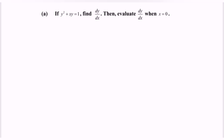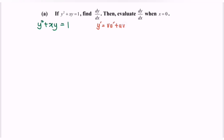Focus on the question: y squared plus xy is equal to 1. Focus on xy — we have a product here. So if we differentiate with respect to x, we need the product rule: y prime is equal to v·u prime plus u·v prime.